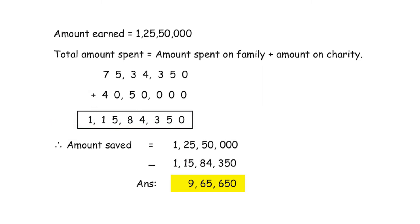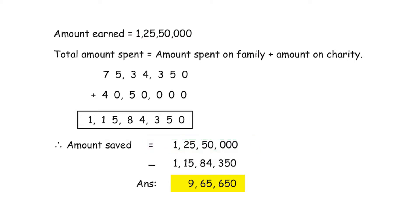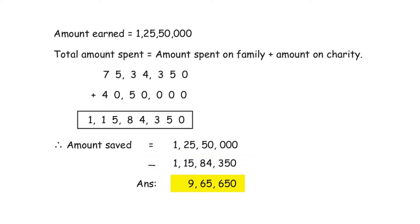The amount saved is the amount earned minus the amount spent. Write down the amount earned: 1 crore 25,50,000 rupees, minus amount spent: 1 crore 15,84,350 rupees. When you do the subtraction, remember to go from right to left. The answer you get is 9,65,650 rupees saved in a year.